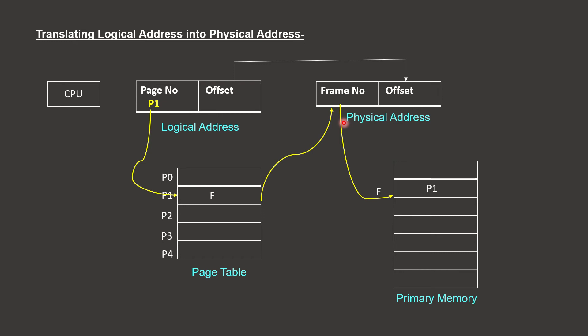We need address translation via the page table. In the logical address, there are two parts: the page number and the offset. The page number identifies which page we are accessing, and the offset is used to fetch the specific instruction within that page. For example, the process P1 generates a logical address with a page number and an offset.